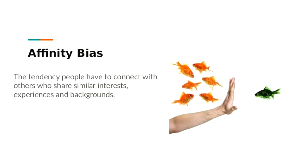The first bias is affinity bias — the tendency people have to connect with others who share similar interests, experiences, and backgrounds. This occurs when a company is looking for someone to fit the culture of the company. A lot of the time, companies will hire people they think will be comfortable and blend in nicely in their environment. A way to avoid this is to take note of the similarities you share and try to put those aside when you're in the middle of the hiring process.